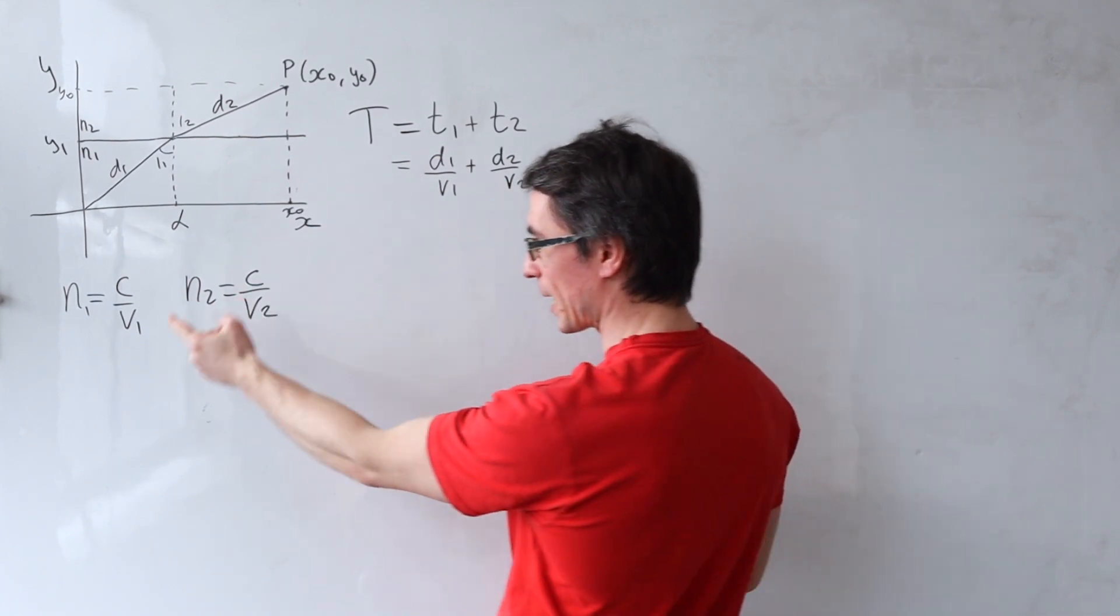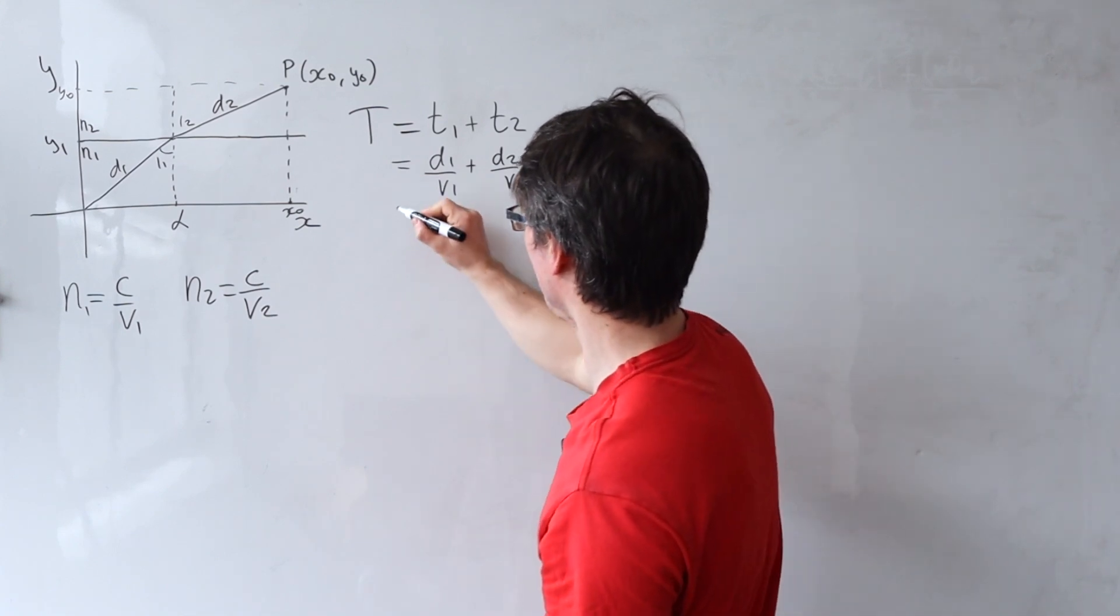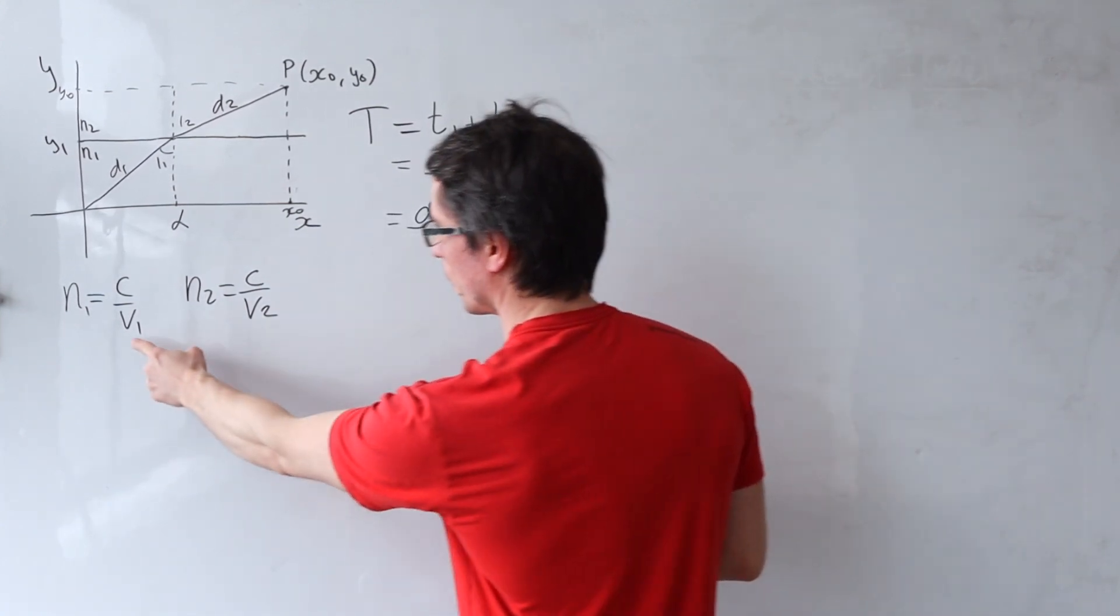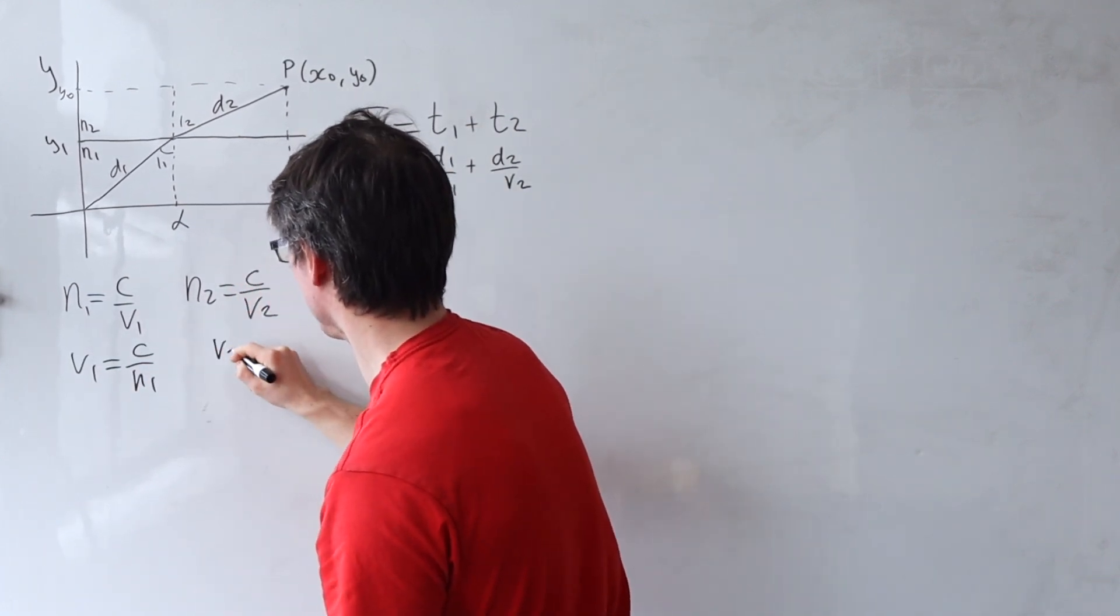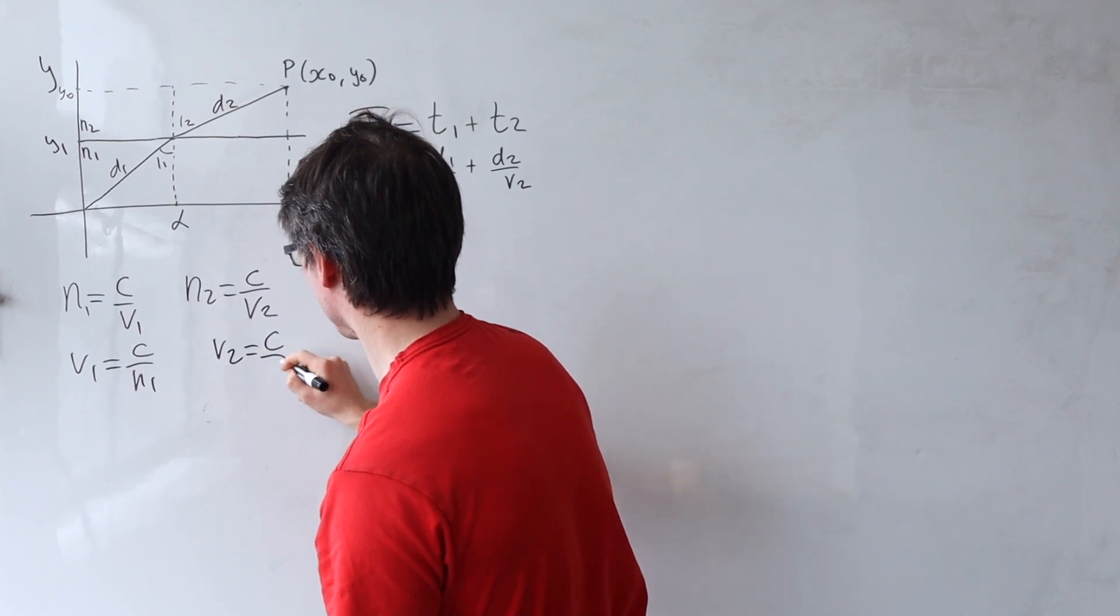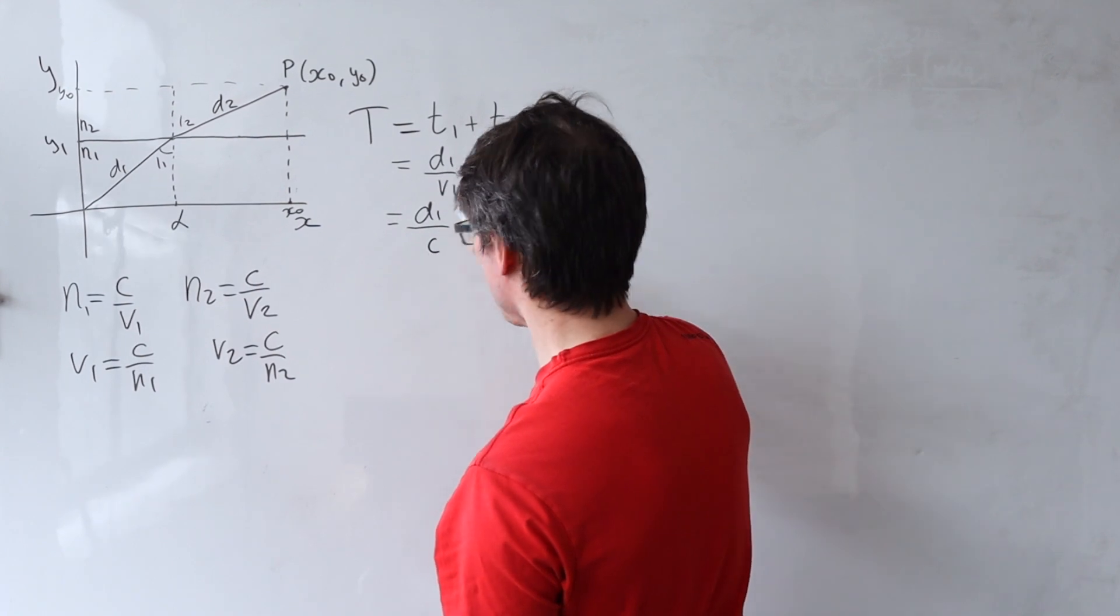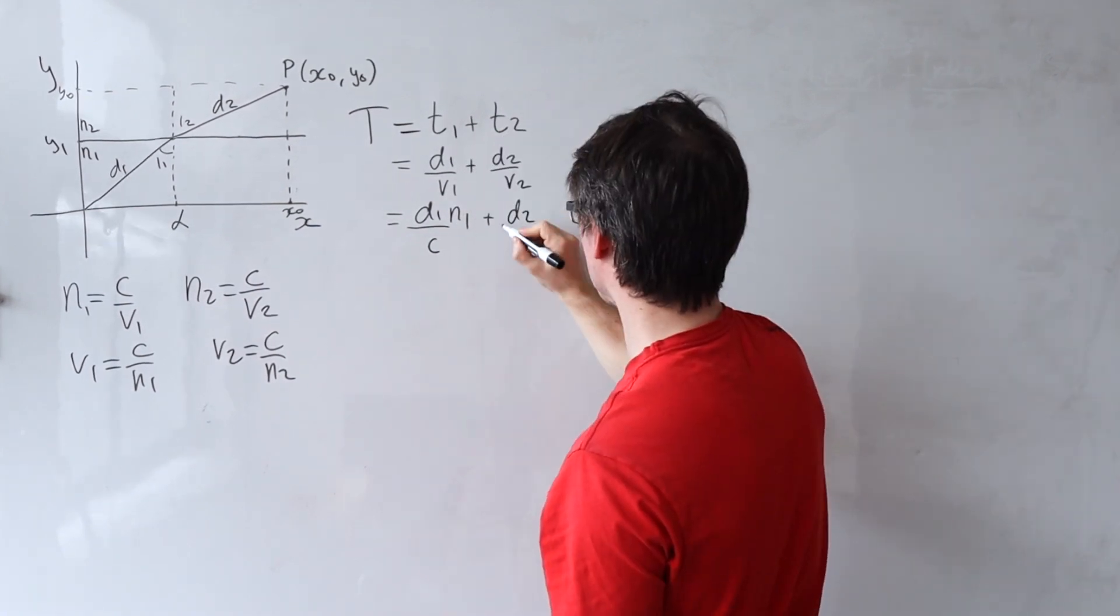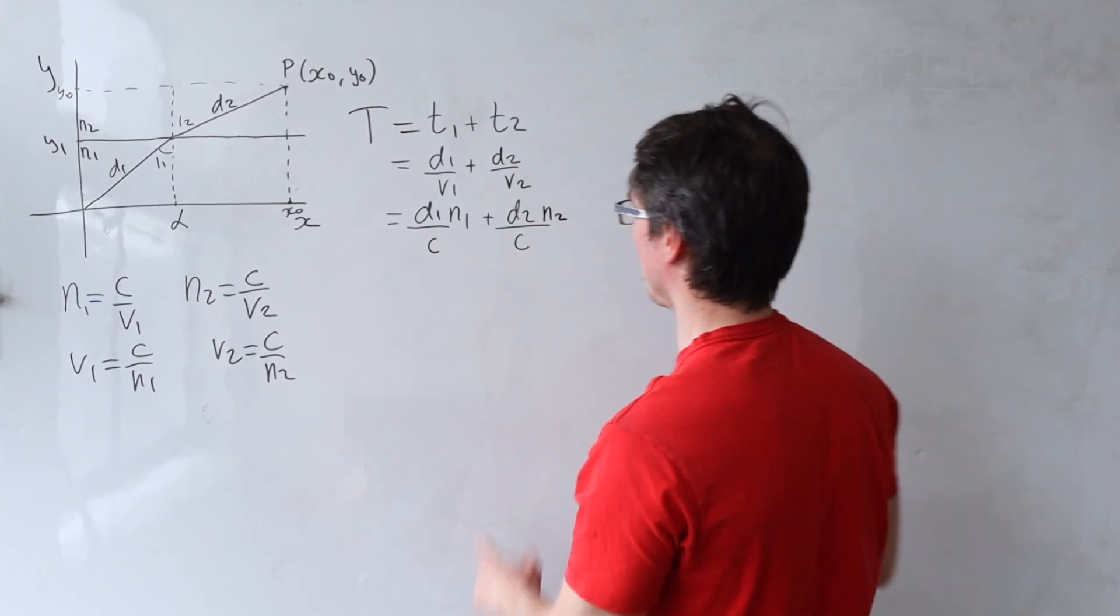Okay now we can actually plug in an expression for v1 in terms of the refractive index and what we're going to get is d1 divided by v1 rearranged is just going to be equal to c over n1 and v2 rearranged is just going to be c over n2. Okay those can go in here c and then a factor of n1 plus d2 then divide that by c and then multiply by n2.